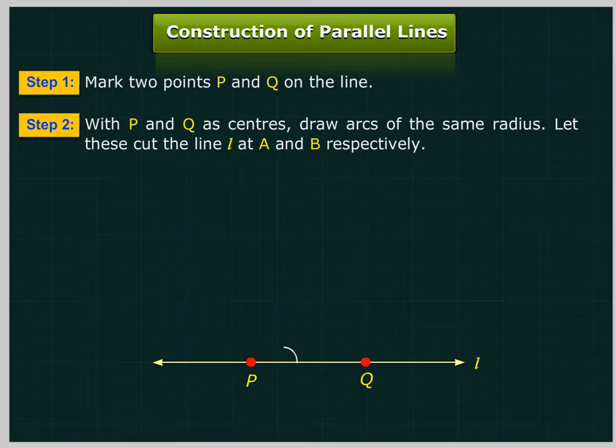With P and Q as centers, draw arcs of the same radius as shown here. Let these cut the line L at A and B respectively.